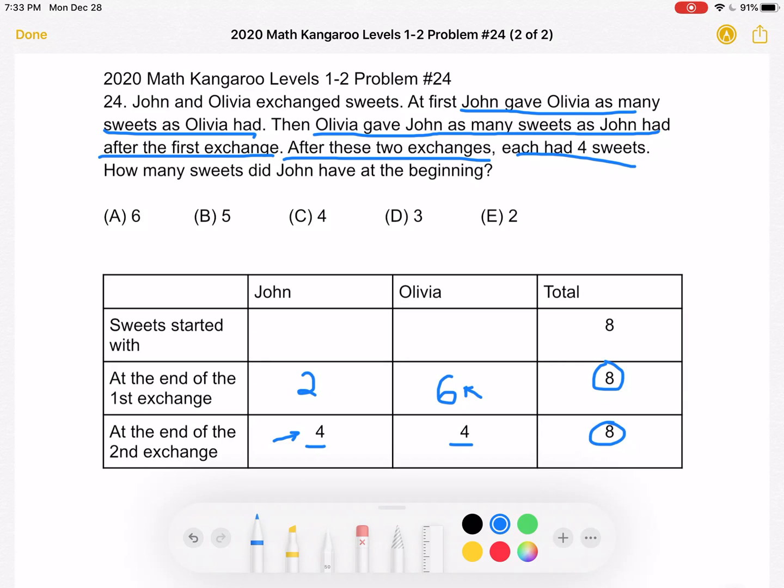So she must have started with three. And again, we still have a total of eight sweets. So if Olivia had started with three, then John must have started with five. This is answer choice B because we're looking for the sweets John had at the beginning, which is right here.